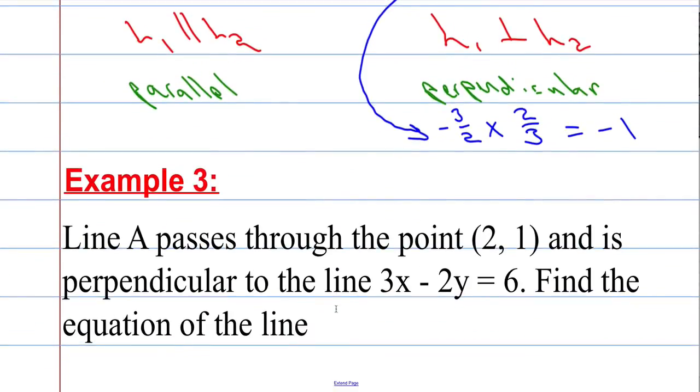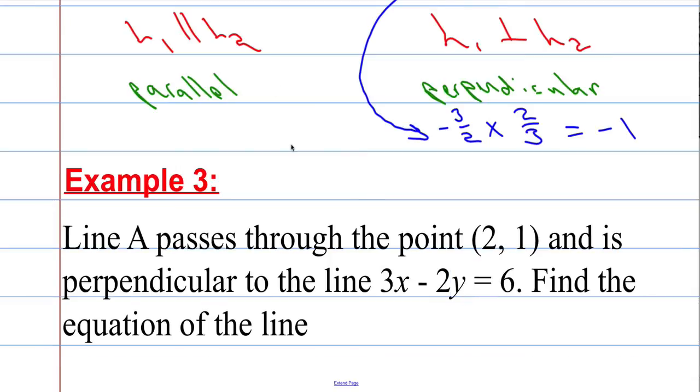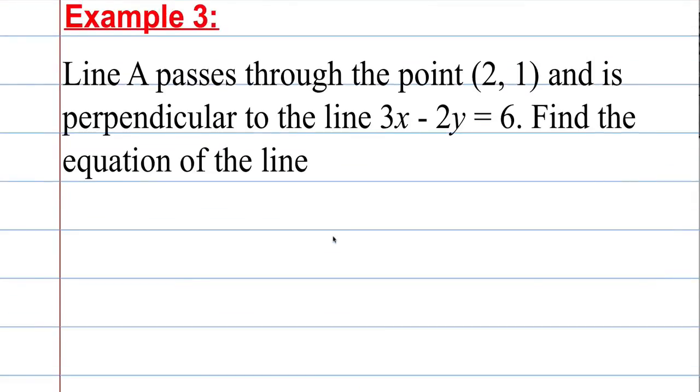Let's have a look at a final example and then we'll wrap it up there. We've got line A passes through the point 2, 1 and is perpendicular to the line 3x minus 2y equals 6. Find the equation of the line. So this is the line, call it L1, is 3x minus 2y equals 6. I would like to know the gradient of this line here.